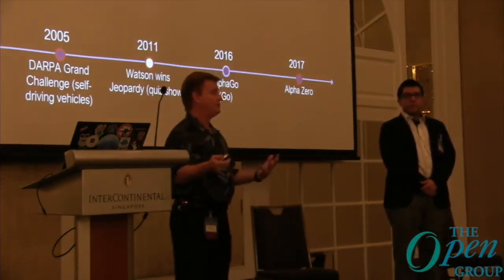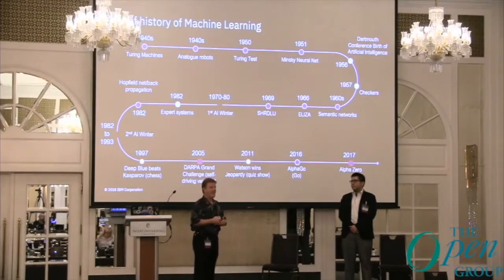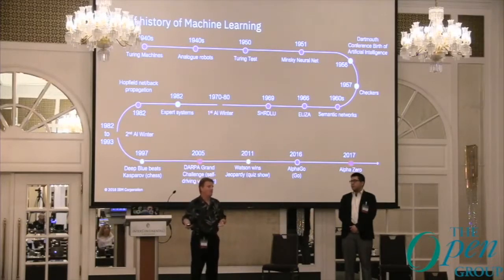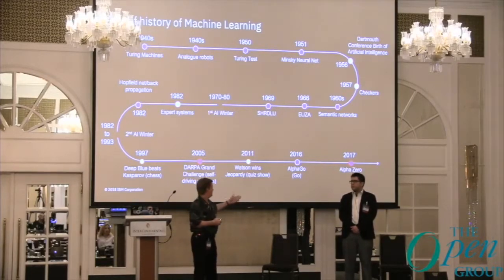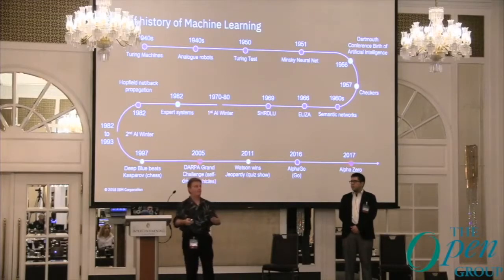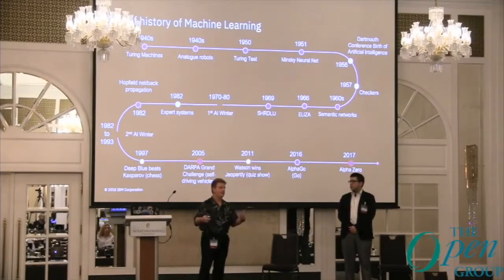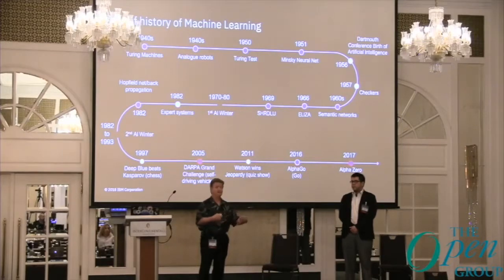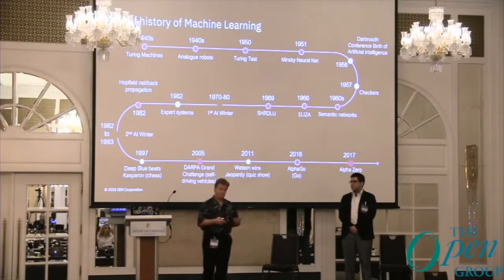Google then started playing Go, one of the most complicated board games, with billions of different permutations. To IBMers, it was an extension of what was done with Deep Blue and Kasparov. What was really interesting was that they came up with back propagation and deep learning networks that learn from learning. They turned the machine around after it learned the basic skills of Go and had it play itself, until it learned all sorts of new patterns that nobody had figured out before.